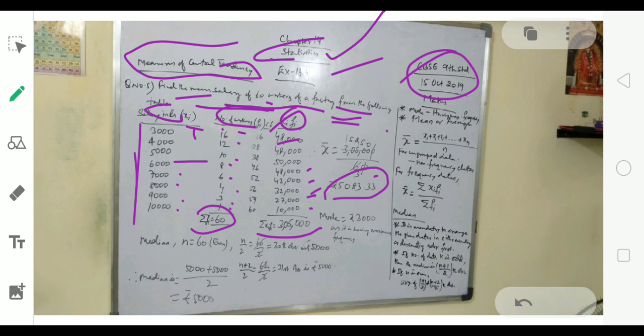Now for mode, we need to find which has more frequency. The highest frequency is 16, which corresponds to 3000 rupees.